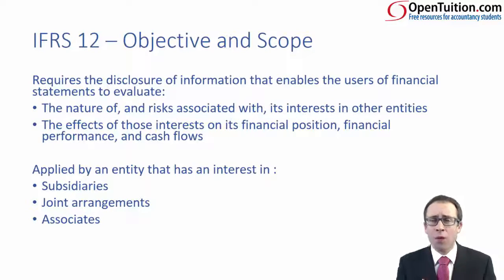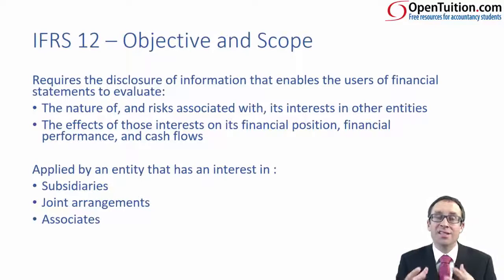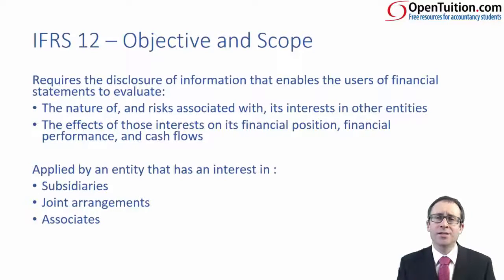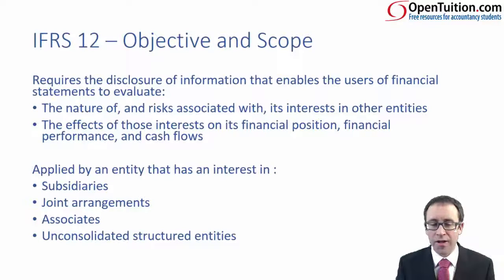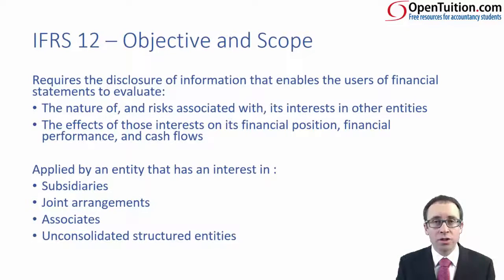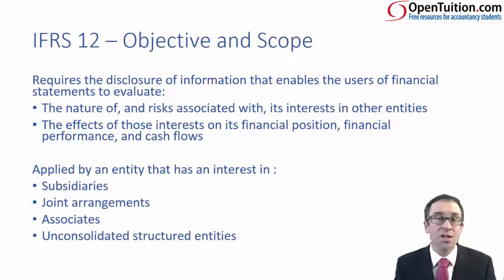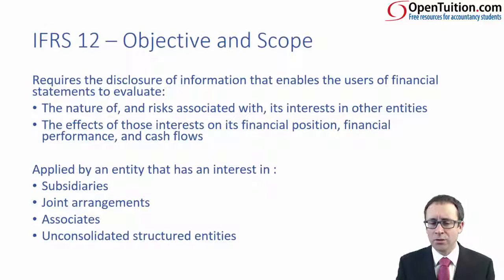From an exam perspective, you may get one question, if that, which just asks you to understand why we have this accounting standard — essentially to give additional disclosure about your associate and entities under joint control, to help the user understand the risks and get a little bit more detail. IFRS 12 also talks about unconsolidated structured entities — whereby you don't have control, you don't have joint control, you don't have any influence and you do not consolidate that entity at all. You might need to put in additional disclosure there for some form of investments. But primarily, it's all about subsidiaries, joint control, and associates.